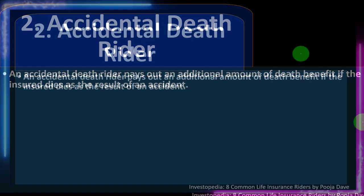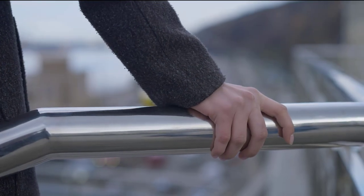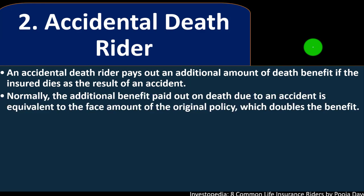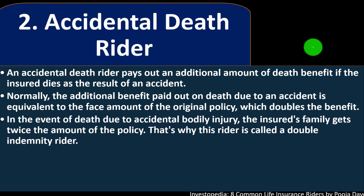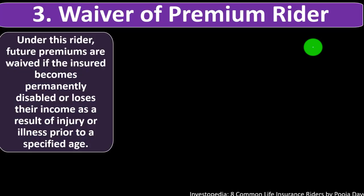Number two: the Accidental Death Rider. An accidental death rider pays out an additional death benefit if the insured dies as the result of an accident. You'd want to clarify what exactly qualifies as dying from an accident. Normally, the additional benefit paid out equals the face amount of the original policy, which doubles the benefit in the event of death due to accidental bodily injury — that's why this rider is called a double indemnity rider. If you are the sole provider for your family, an accidental death rider can be ideal because the double benefit will take good care of your surviving family's expenses.